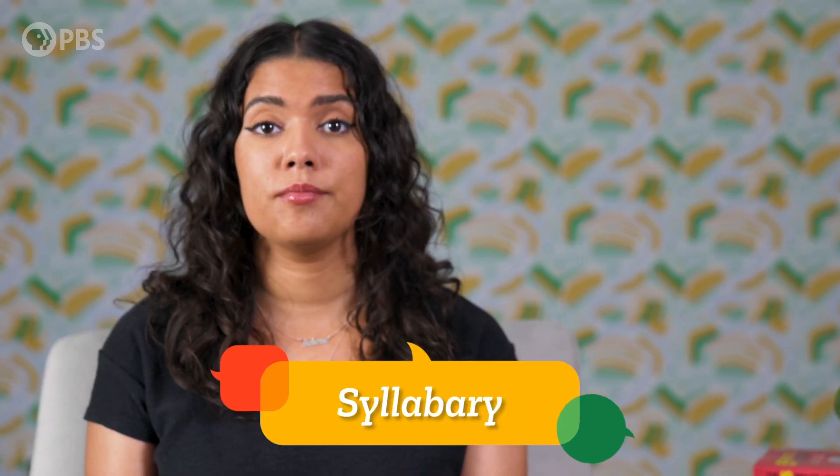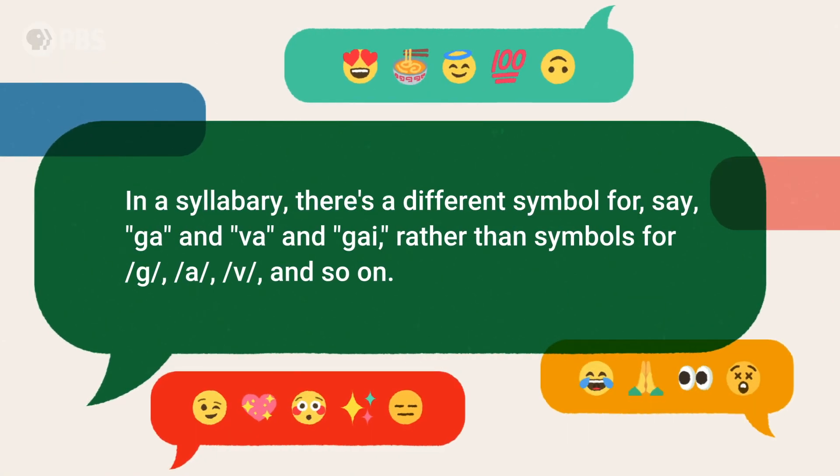The next type of writing system is where each grapheme represents a syllable, known as a syllabary. In a syllabary, there's a different symbol for, say, 'ga,' 'ge,' and 'gi,' rather than symbols for g, e, and so on. Many writing systems in the region around India are based on the nigari syllabary, where there's a different symbol for each syllable like 'ka' or 'ga,' then a small modification to indicate the vowel to make 'ki' or 'ko.'